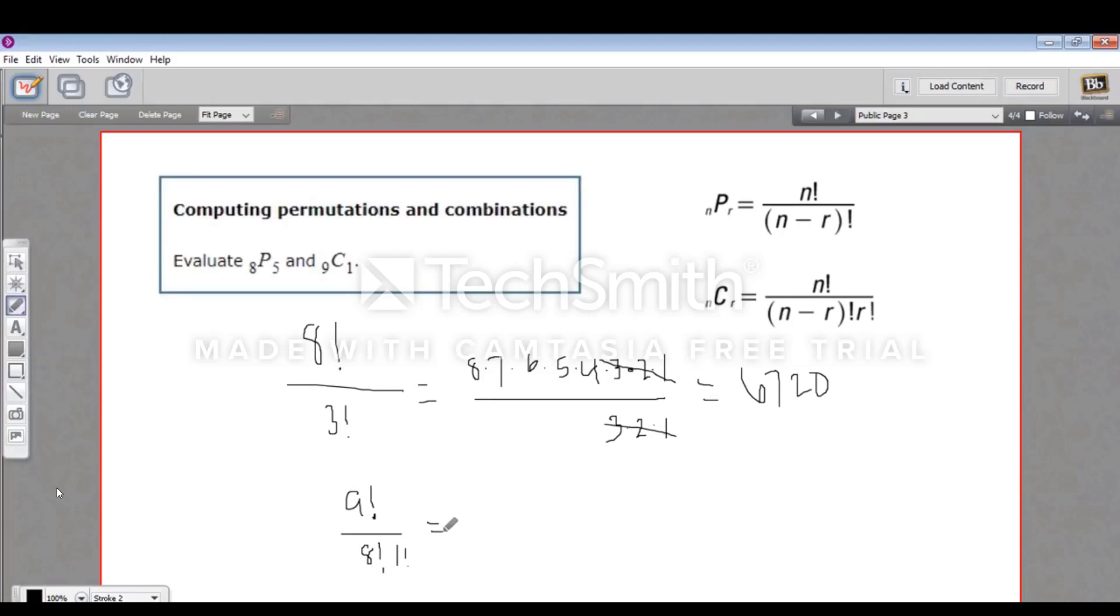We've got nine times eight times seven times six times five times four times three times two times one. And that's over eight factorial, so eight times seven times six times five times four times three times two times one times one factorial, which is just another times one. Now, all of this is going to cancel. And then this times one, well, it doesn't really matter. What we end up with is nine over one or just nine.